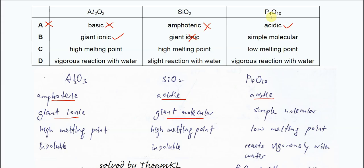For the phosphorus oxide, it's simple molecular. So B cannot be the answer.